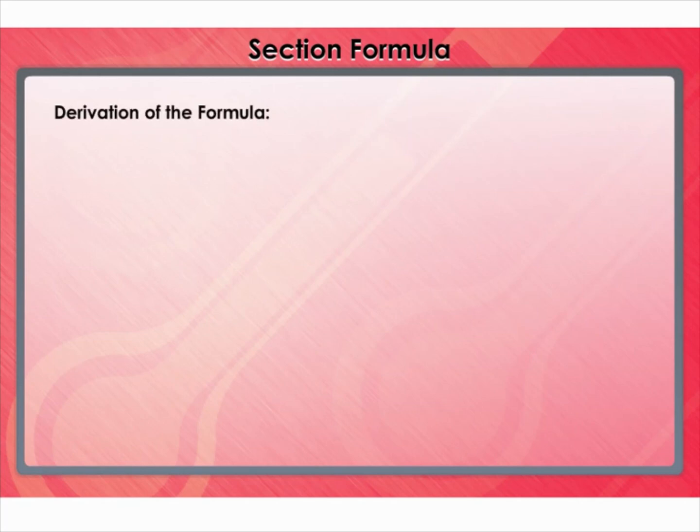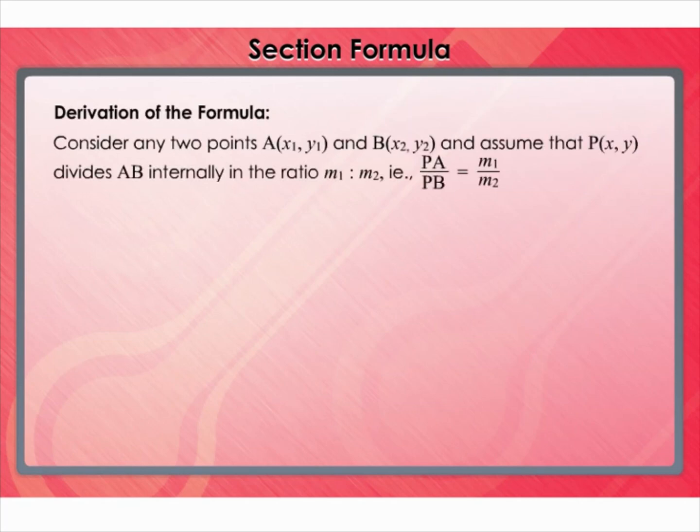Section Formula: Now let's use the understanding developed through this example to obtain the general formula. Derivation: Consider any two points A(x₁, y₁) and B(x₂, y₂), and assume that P(x, y) divides AB internally in the ratio m₁:m₂.